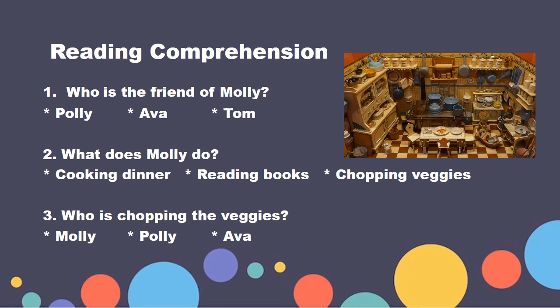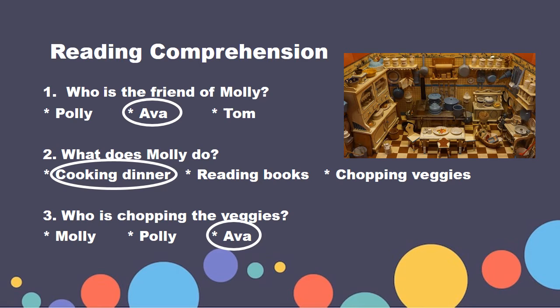Answers: who is the friend of Molly? It's Ava. What does Molly do? Molly is cooking dinner. Who is chopping the veggies? It's Ava.